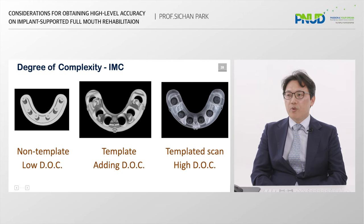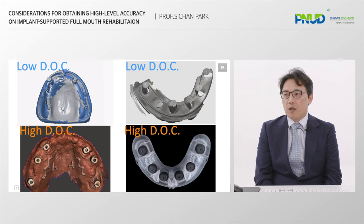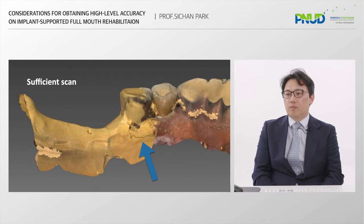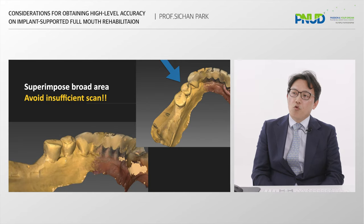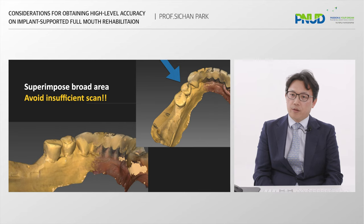Using a dentition-like template can add complexity to the scan and help achieve easier, more accurate scanning. Please look at the guide pin on the buccal side. You can add geometry to the smooth palate to add complexity. I added flow composite for complexity and easy scanning. Nowadays, intraoral scanners can generate much more data than before, so you should consider both data amount and sufficient data coverage in full arch scans.